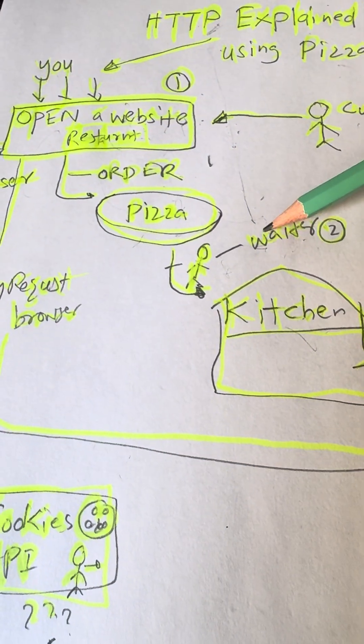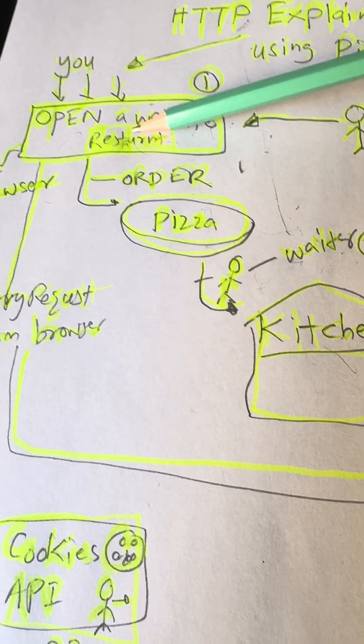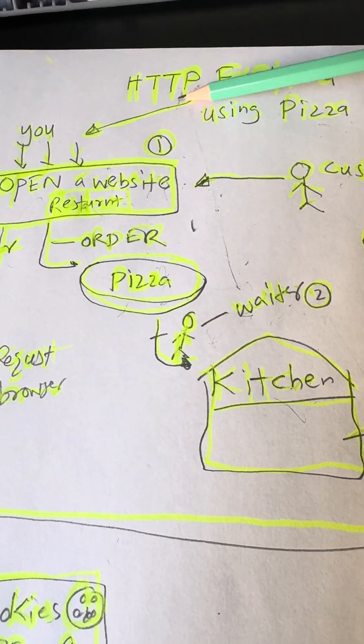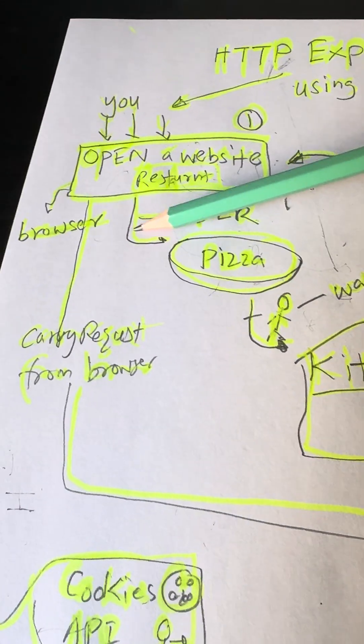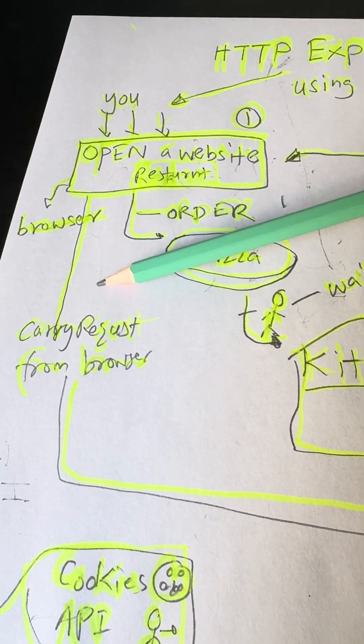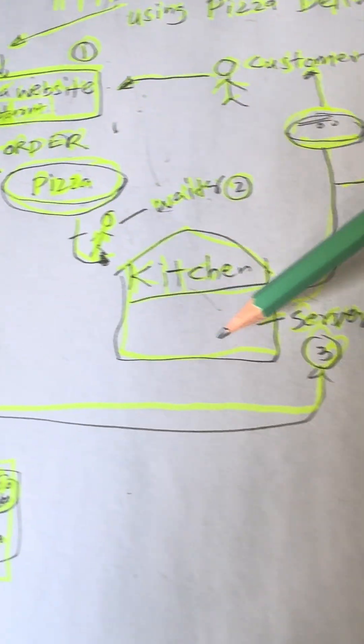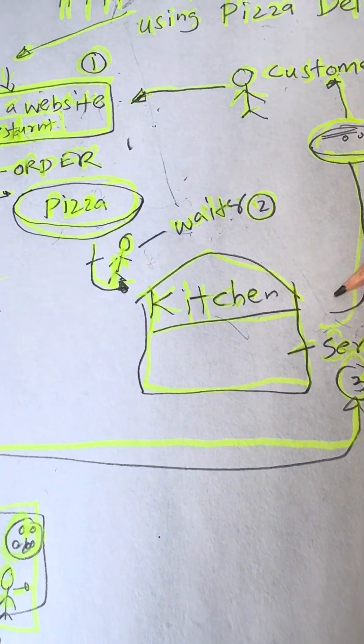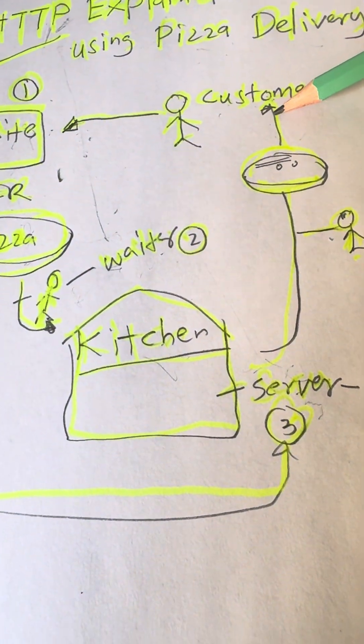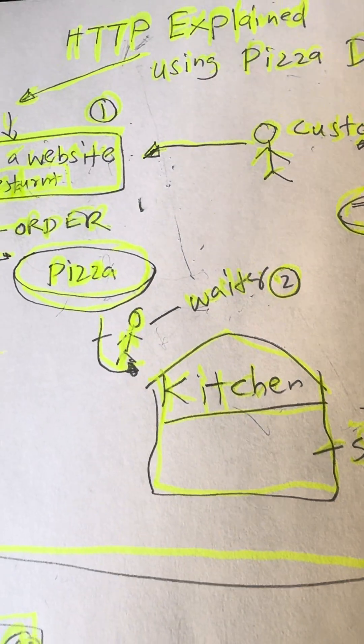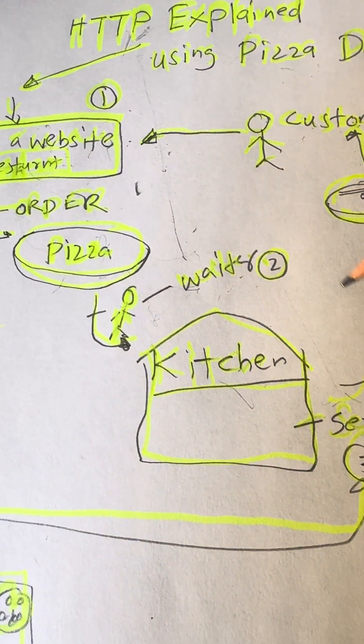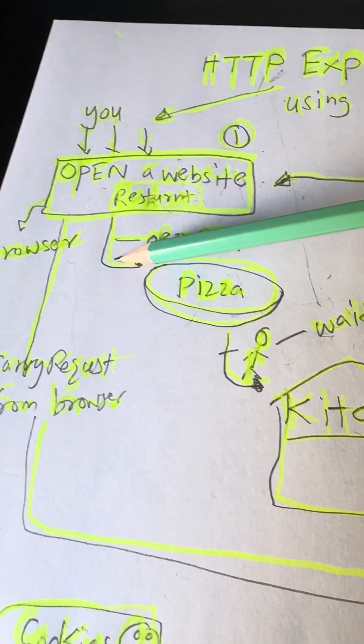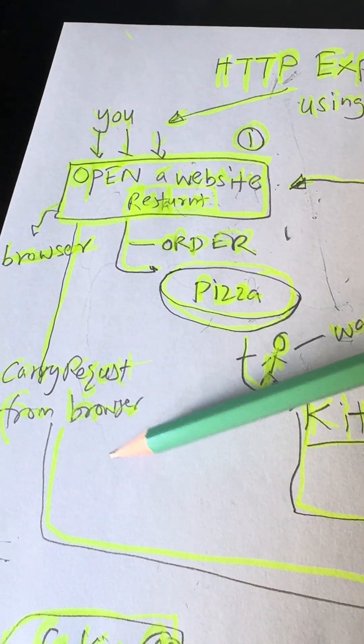In the internet world, that waiter is HTTP. It carries your request from your browser to the web server, and then brings back the response. When you click on a link or type a web address, HTTP rushes to the server, picks up the data, and delivers it.